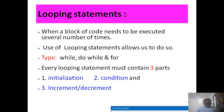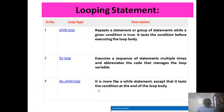Every looping statement — whether while, do-while, or for — must contain three essential parts: first, initialization; second, a condition; and lastly, increment or decrement. Every looping statement must contain these three parts: initialization, condition, and increment or decrement.